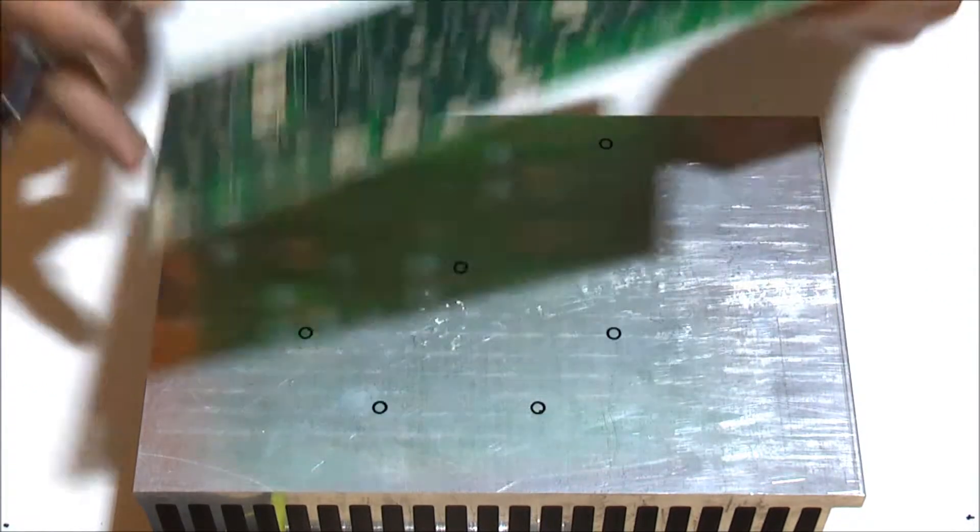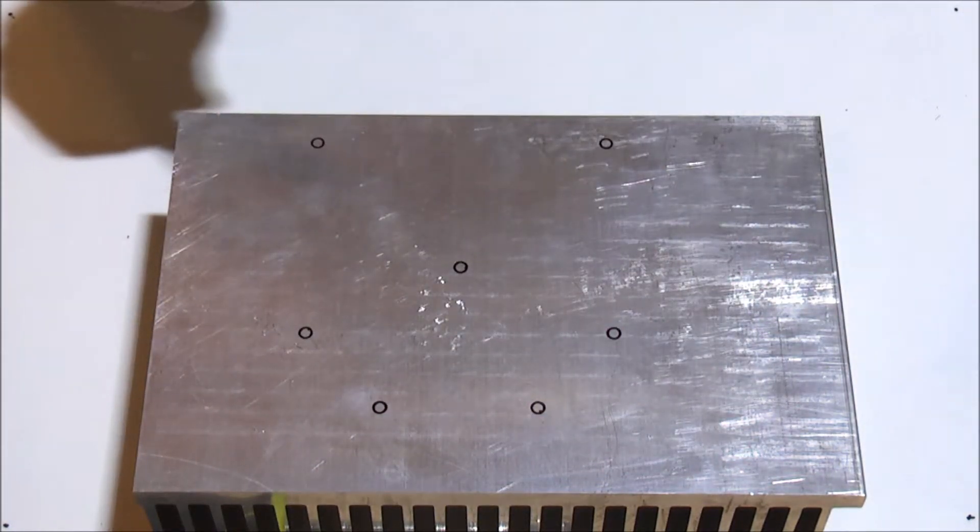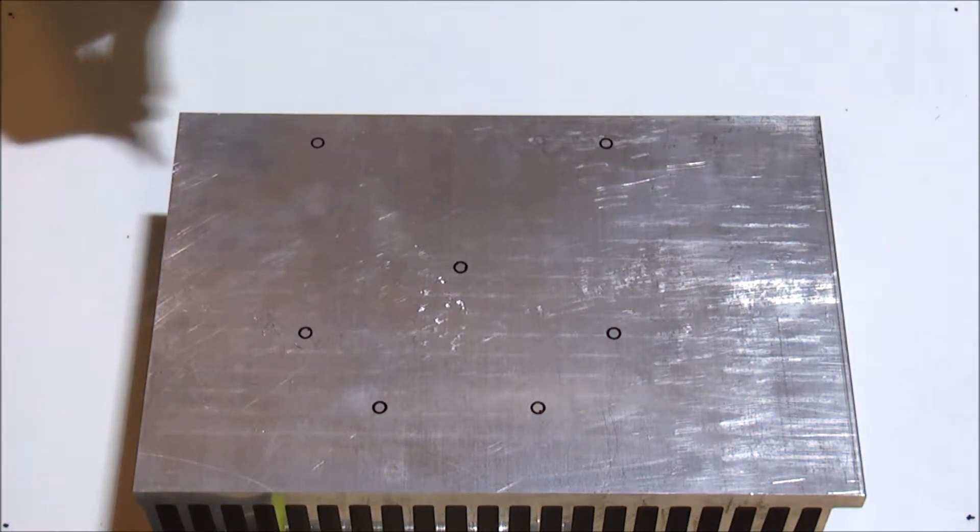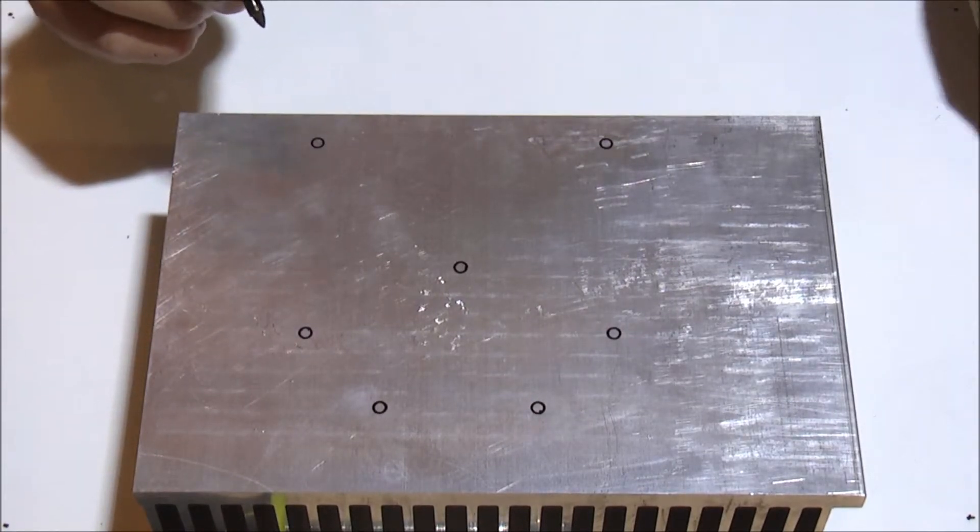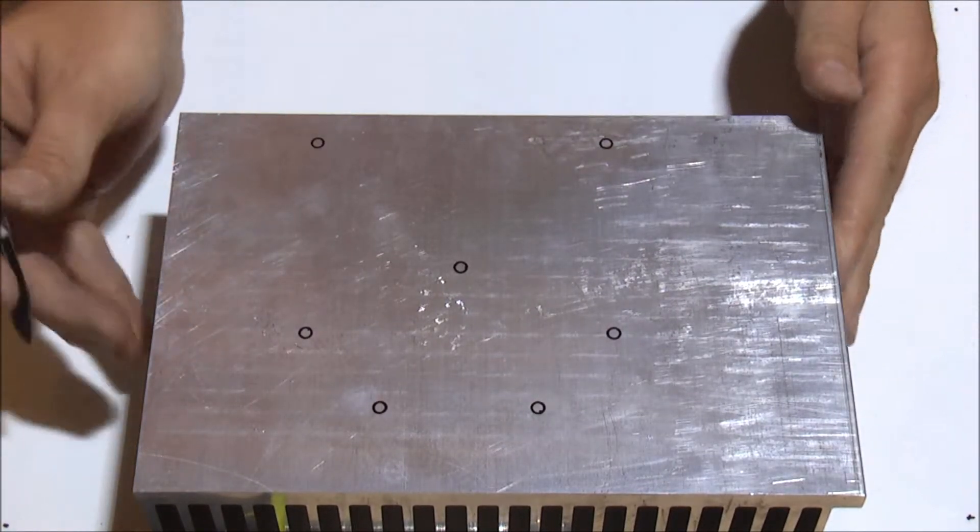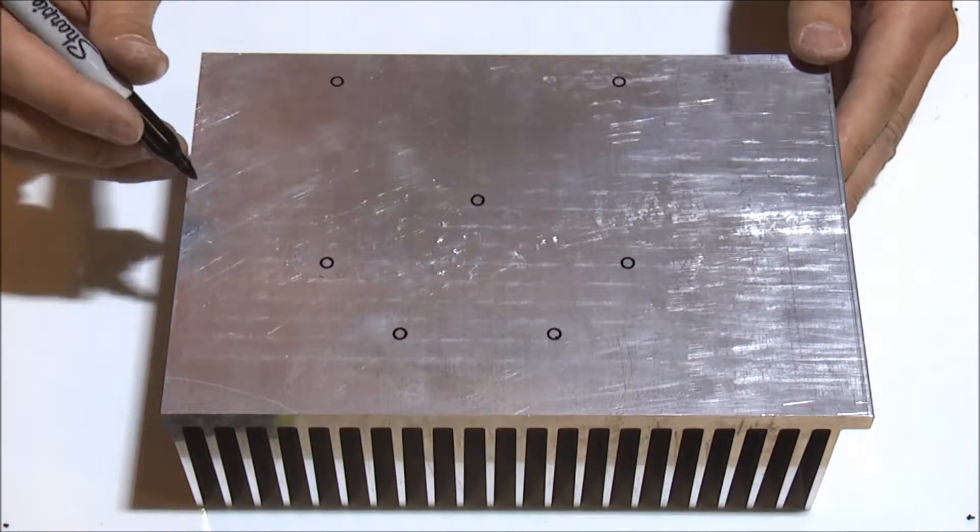Now you are almost set with the mapping of the pattern, the mounting pattern for the board. The two other holes that we need to make are the ones that will be used to mount the heatsink itself to the enclosure.